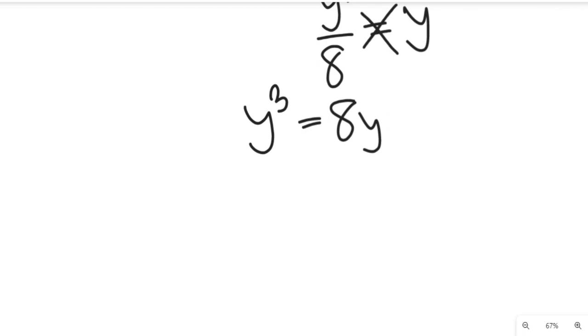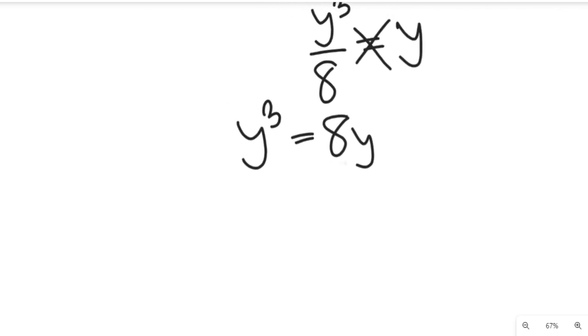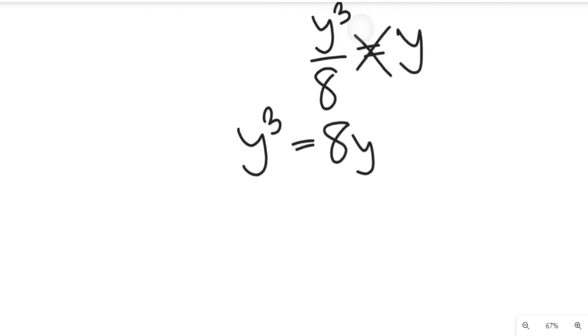So what we need to do is to bring 8y to the left hand side. Once we've brought that, this will now give us y³ minus 8y, and this will be equal to 0.